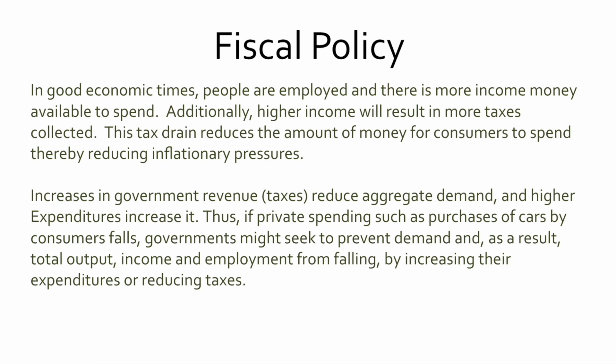In good economic times, people are employed and there is more income available to spend. Increases in government revenue, such as taxes, reduce aggregate demand — you're pulling money out of the economy when you tax people. Higher expenditures by government increase aggregate demand, creating jobs and demand in the economy. Thus, if private spending such as purchases of cars by consumers falls, governments can seek to prevent problems by increasing its own demand — stepping in to artificially bring up demand and bring the economy back to life.